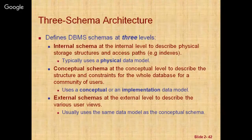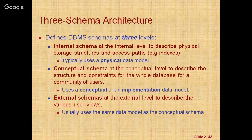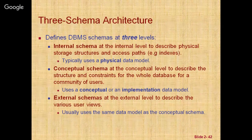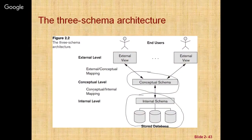In a DBMS based on the three-schema architecture, each user group refers to its own external schema. The DBMS must transform a request specified on an external schema into a request against the conceptual schema, and then into a request to the internal schema for processing over the stored database.